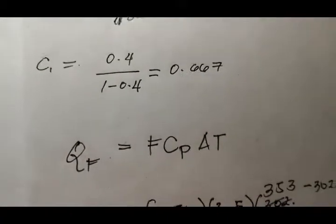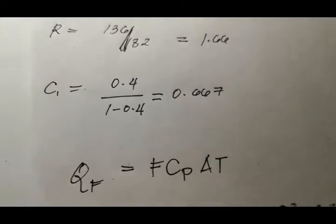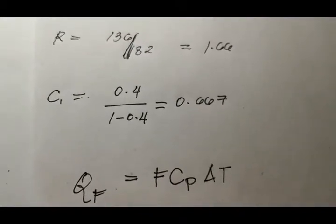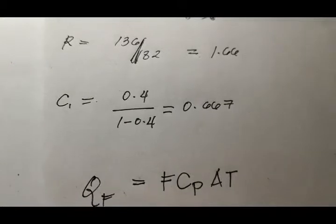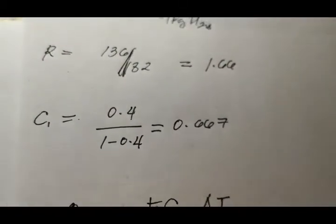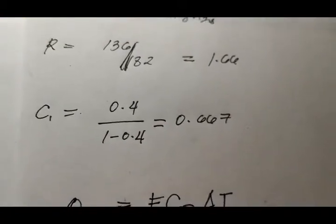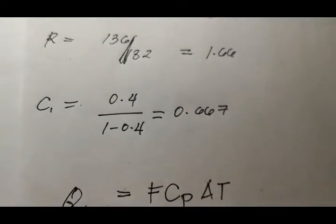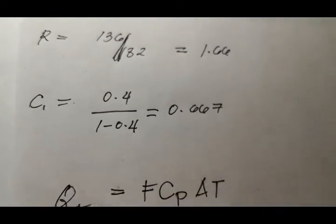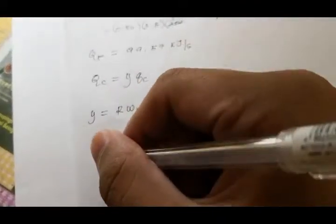So if we have 0.4 mass fraction of solute in the solution, we can get the solubility by doing 0.4, assuming a basis of 1 kg, 0.4 over (1 minus 0.4) of solute. So we will get 0.667 kg solute per kg solvent. Now we are ready to express this one.